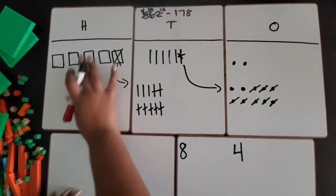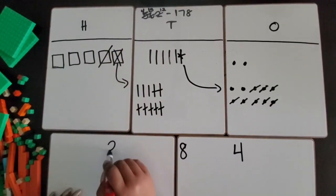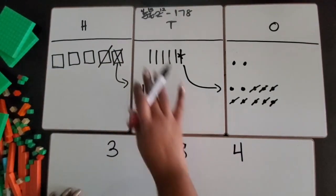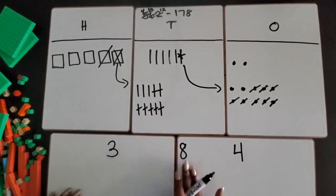I have 4 hundreds. I need to subtract 100. I still have 3 hundreds remaining. So the difference between 562 and 178 is 384.